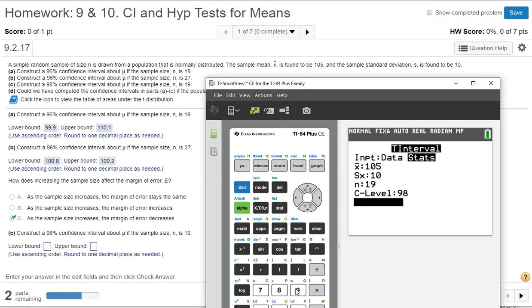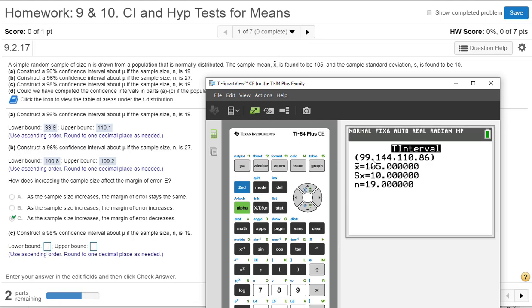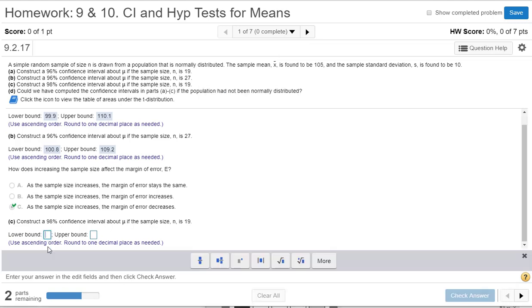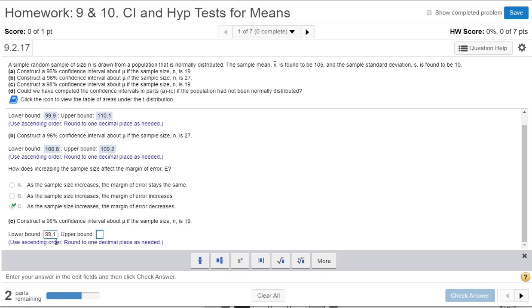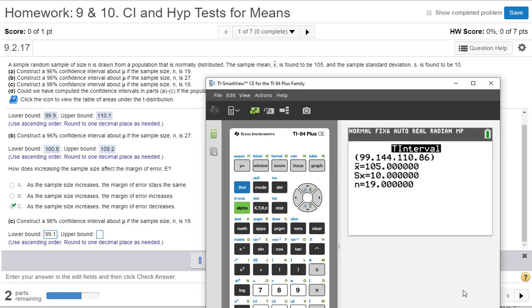And again, I imagine the next natural question is going to be, what do you expect is going to happen to the interval as I increase the confidence level? And we're comparing it to A. So let's go ahead and write it in. The interval is from 99 to one decimal, so 99.1 to 110.9.